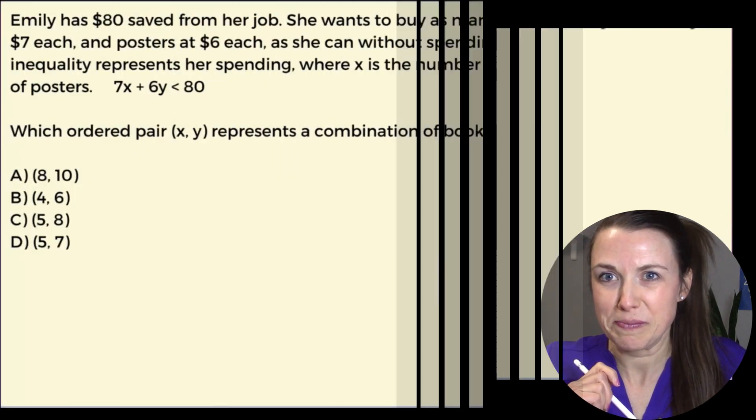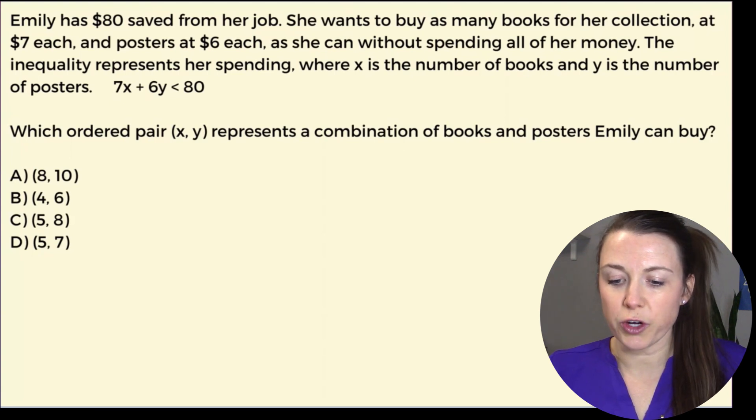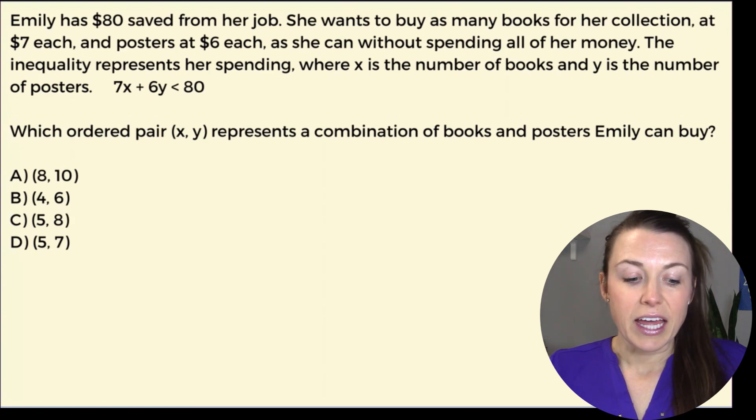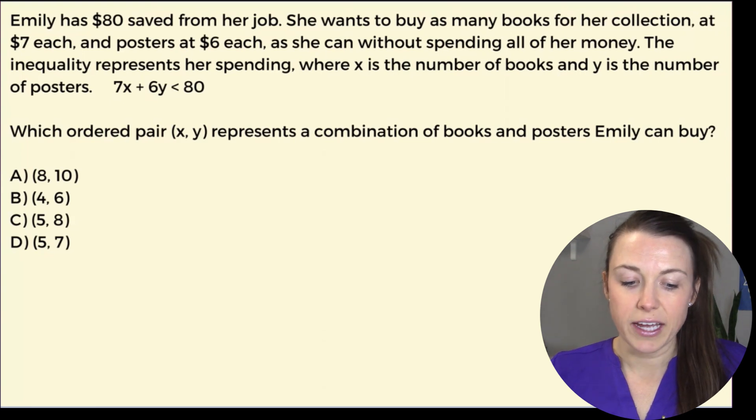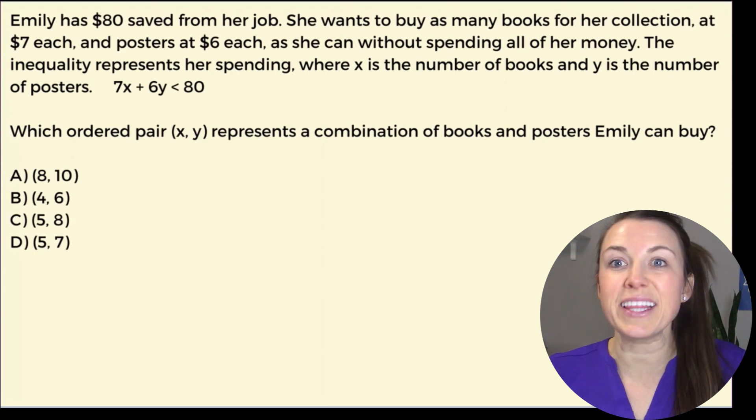Emily has saved $80 from her job. She wants to buy as many books for her collection at $7 each and posters at $6 each as she can without spending all of her money. The inequality represents her spending where x is the number of books and y is the number of posters. 7x + 6y is less than or equal to 80. Which ordered pair (x, y) represents a combination of books and posters Emily can buy?